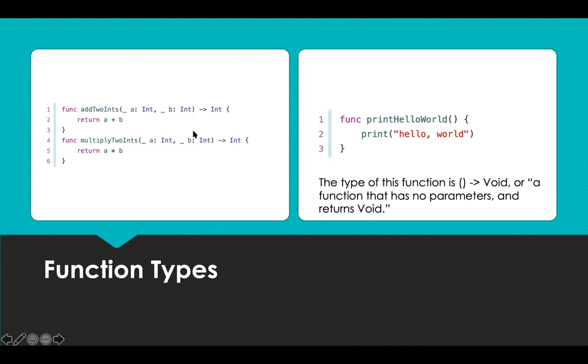The brackets here can be read as a function that has two parameters, both of type Int, and that returns a value type of Int. This example on the right is an example of a function that doesn't have any parameters. The type of this function is () -> Void, or what that means is a function that has no parameters and returns Void.